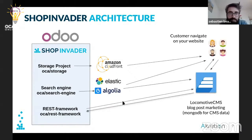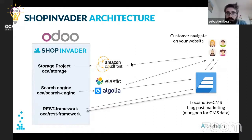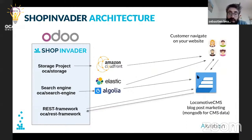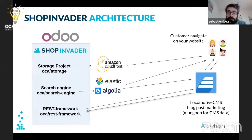Something important to understand is that basically every feature is an Odoo module. For example, if a user navigates on your website, it currently requests Locomotive for a web page. If it's a product page, Locomotive will read the product information from Elastic or Algolia, and then render that page to the visitor.